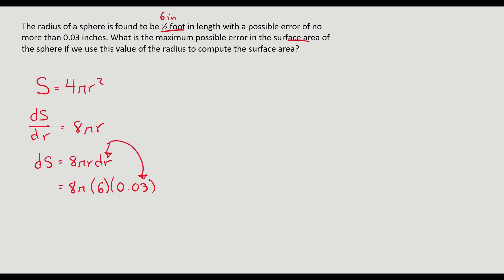So then I'm given that, and I go 8 times 6 times 0.03, and then times pi, and I get the value of 4.524 if I round to that. And we are dealing with a change in surface area, so inches squared. So using differentials, we can approximate the maximum possible error is 4.524 inches squared.